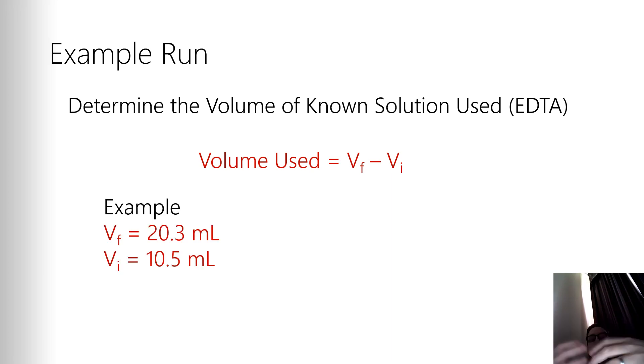So our next step, let's look at an example run. First thing we got to do is determine the volume of the known solution we used. So we're going to get this from the images. We're going to have the volume final and subtract the initial volume. I'm just going to use an example set of data. So let's say in this run, my final volume was 20.3 milliliters and my initial volume was 10.5 milliliters.